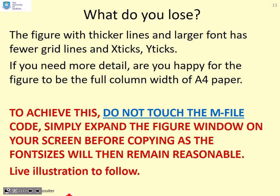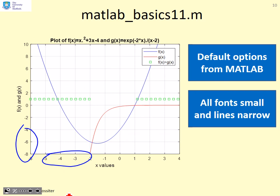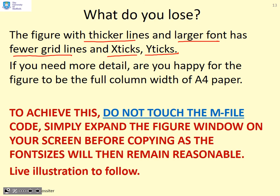So what do you lose by having these smaller windows? Well, you'll notice the figure with thicker lines and larger font has fewer grid lines, fewer X ticks and fewer Y ticks. And this is because we've basically assumed that the A4 is double column and assumed the figure is going to fit into one of those columns. So let's go back and you can look at the figure. So you can see here these labels or these X ticks are fairly well spread. Whereas if I took the MATLAB default, which was here, you can see I've got far more of these ticks. So your option is to decide what exactly is it you want. How much detail do you need? Are you happy, in fact, for the column to be full column width of the A4 paper, which is quite big for most reports, but it might be you need lots of detail and therefore that's what you want to do.